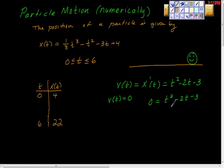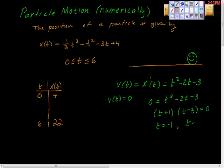This is just Algebra 1 now — we factor: (t + 1)(t - 3) = 0. Solving, the velocity goes to 0 when t = -1 and when t = 3. We throw out t = -1 because it's off the interval — we only care from 0 to 6, and -1 doesn't fit in there. So we're interested in t = 3.